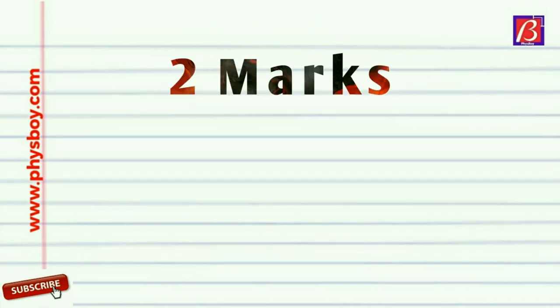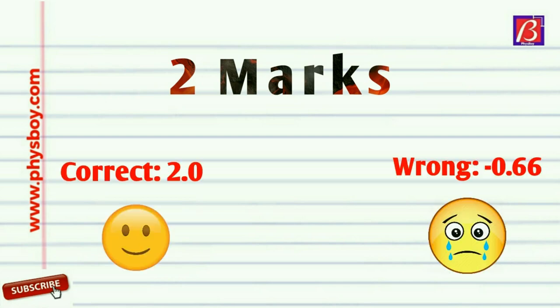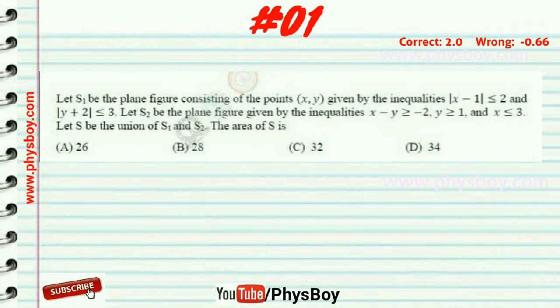Now let's go for two-marks questions. For a correct answer you will get two marks, and for a wrong answer you will get minus 0.66 marks. Friends, be careful about negative marks.